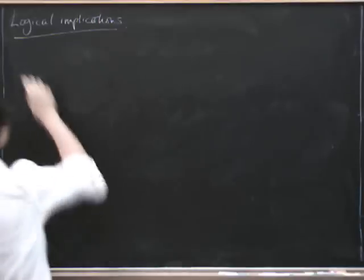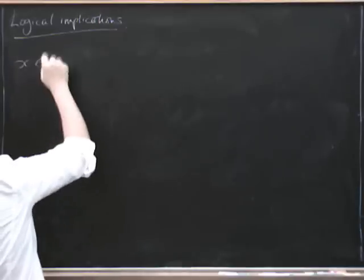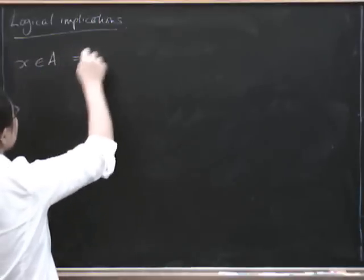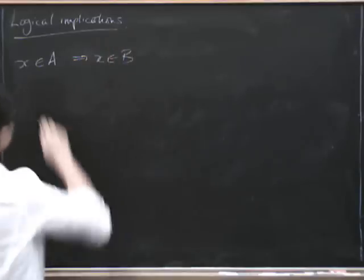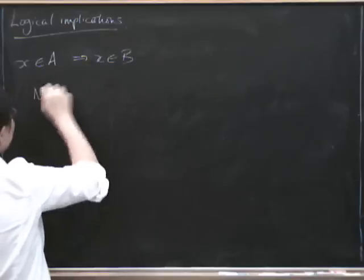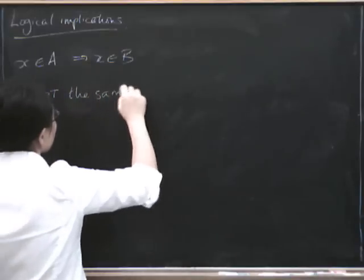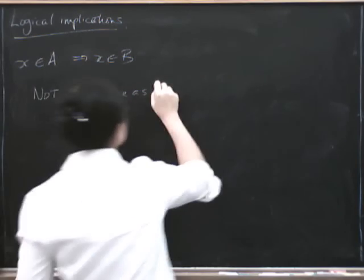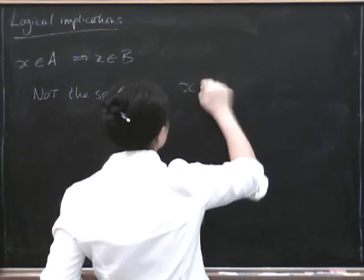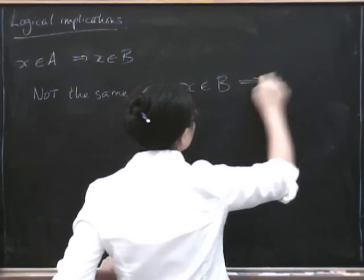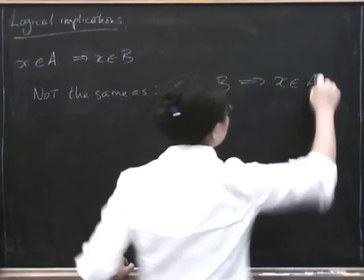the thing that we had just now, we have X is in A implies X is in B, right? This is not the same as, it's not the same as if we go the other way around. X is in B implies X is in A, right?